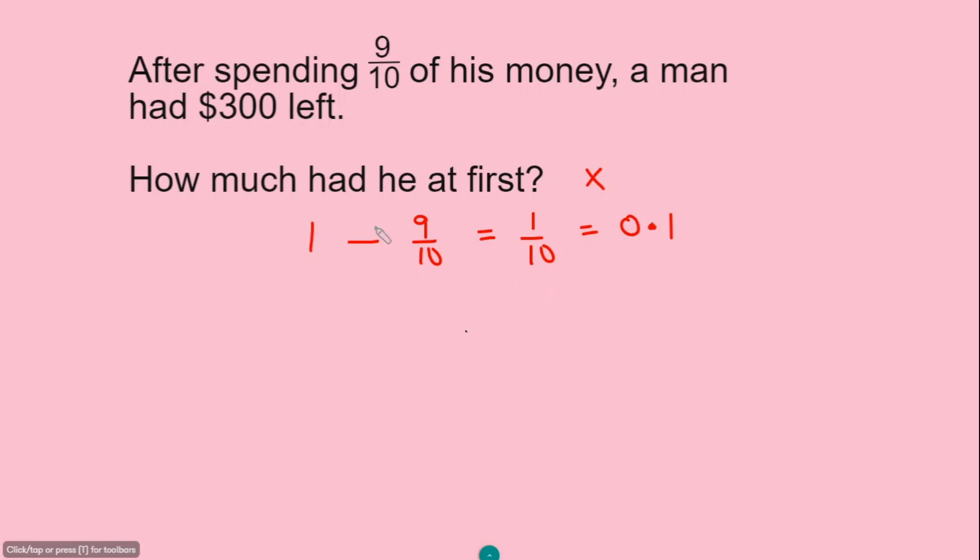So to work on how much he had at first, I'm gonna apply this value by X. So I'm gonna write 0.1 times X is equals to the money had left, which is 300.